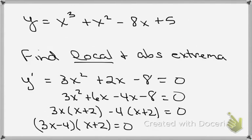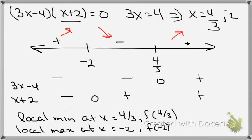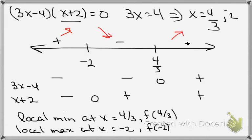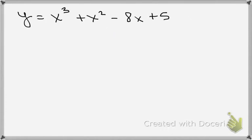And f of minus 2 is the local maximum. So let me go back and see what that function was. And so now I know that f of 4 thirds is a possibility for an absolute maximum. f of minus 2 is a possibility for absolute max or min.